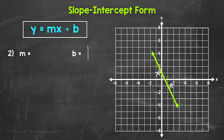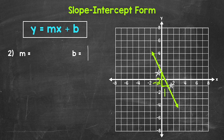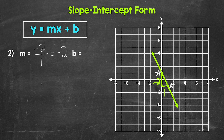Now let's use another point on the line and figure out the slope. We'll work from the left point to the right. Starting with the rise, we need to go down two units. Since we went down, this is going to be a negative two — our rise is negative two. Then we go over one unit to the right, so our run is one, a positive one. Our slope is rise of negative two over run of one, which simplifies to just negative two. We plug in negative two for m and one for b, so y equals negative 2x plus one. That's our equation for that line.